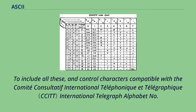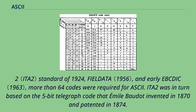To include all these, and control characters compatible with the CCITT International Telegraph Alphabet No. 2 standard of 1924, and early EBCDIC, more than 64 codes were required for ASCII. ITA2 was in turn based on the 5-bit telegraph code that Émile Baudot invented in 1870 and patented in 1874.